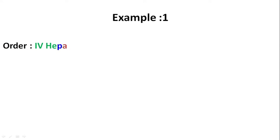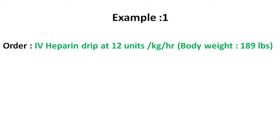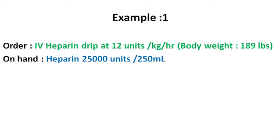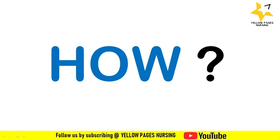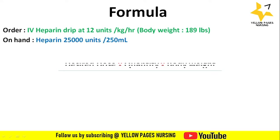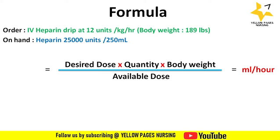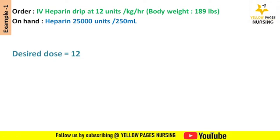Let's get into the examples. Example one: doctor's order is IV heparin drip at 12 units per kg per hour, body weight is 189 lbs, on hand is heparin 25,000 units per 250 ml. What will be the infusion rate set on the infusion pump? To calculate this we need the formula: desired dose multiplied by quantity multiplied by body weight, divided by available dose, which gives ml per hour. Here the desired dose is 12, which is the doctor's order.